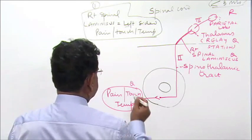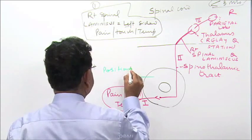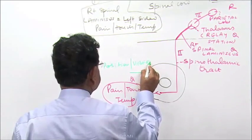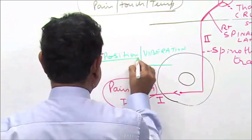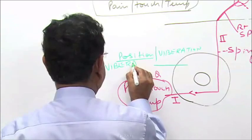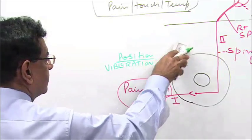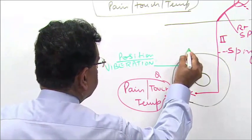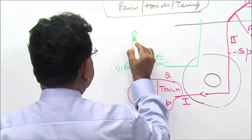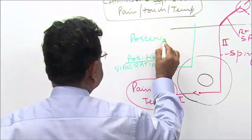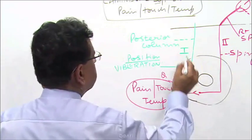Position and vibration sense enter the spinal cord without relay. They travel upward without relaying, straight through the posterior column. This is the posterior column pathway, and this represents the first order neuron traveling upward.